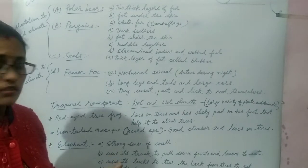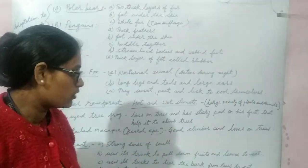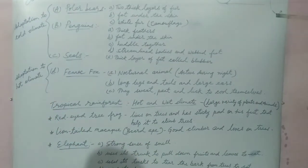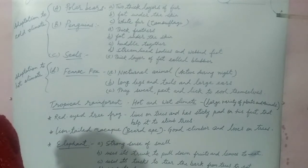Second one is lantern macaque. It is also known as weird ape. It is a very good climber and lives on trees. They get all their food on trees and hardly ever come down.